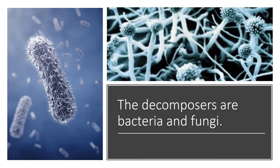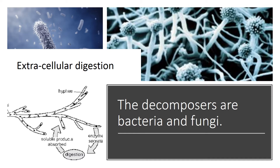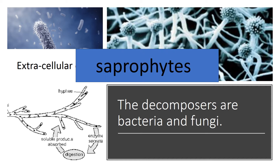Now, this decay can cause problems as well, problems like food spoilage, and there are various ways we can slow this process down. The decomposers are fungi and bacteria, and they use extracellular digestion. This is where enzymes are secreted, the organic matter is broken down by the enzymes, and the products are reabsorbed. So dead plants and animals are pretty much liquefied by these decomposers. Organisms that feed on dead material in this way, we call them saprophytes — they are saprophytic.